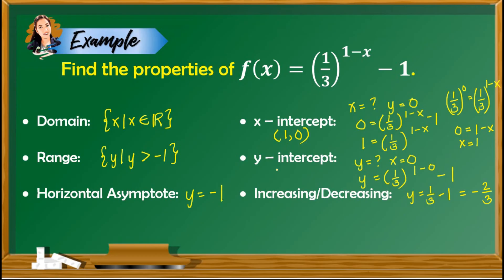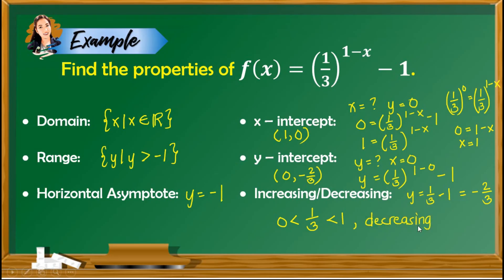So the y-intercept is given by (0, negative 2 thirds). As for the behavior of this graph, whether increasing or decreasing, we look at the value of a. The value of a is 1 third, which is between 0 and 1. With this, we can conclude that the graph is decreasing. These are the properties of the given function.